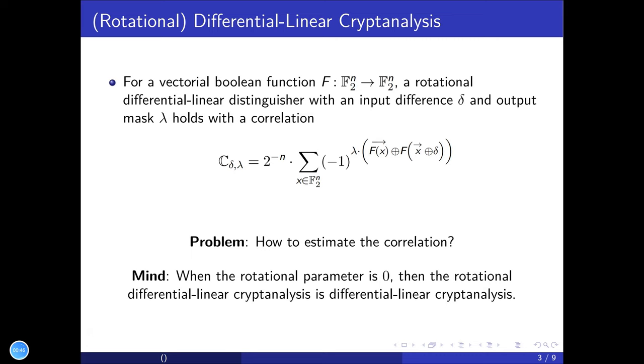For a vectorial boolean function, given the rotational input difference delta and output mask gamma, we can build a rotational differential-linear distinguisher by a linear approximation on rotational output difference. And the problem is how to estimate the correlation.